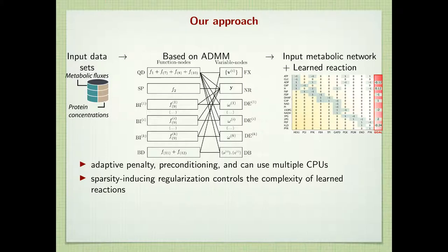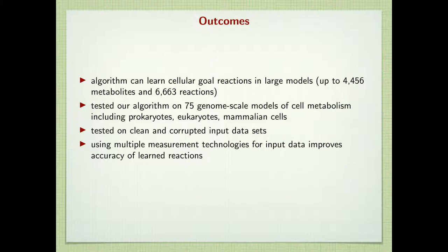We tested our algorithm on 75 metabolic networks, including bacteria, yeast, and mammalian cells, with the largest network having over 4,000 metabolites and 6,000 reactions.